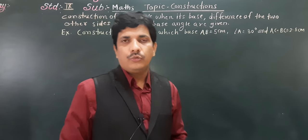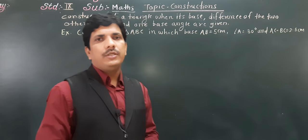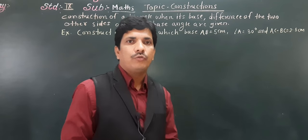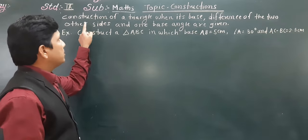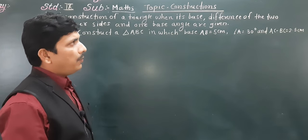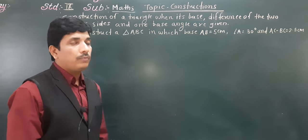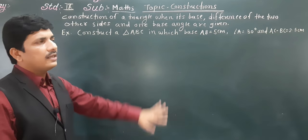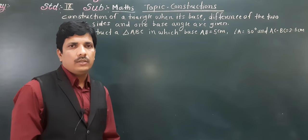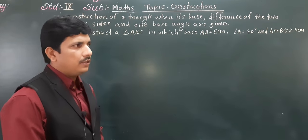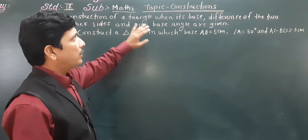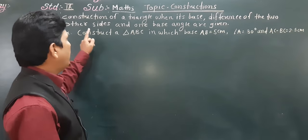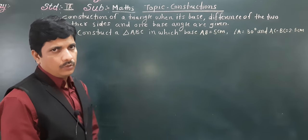Hello everybody. Today we are going to see the next type of construction — that is construction of a triangle when its base, the difference of the 2 other sides, and 1 base angle are given. In the last period we saw construction of a triangle when its base, sum of the other 2 sides, and 1 base angle are given.